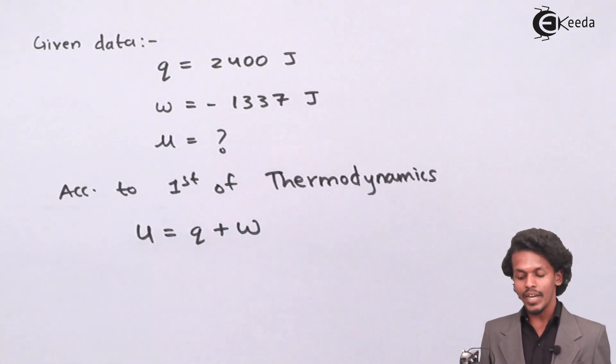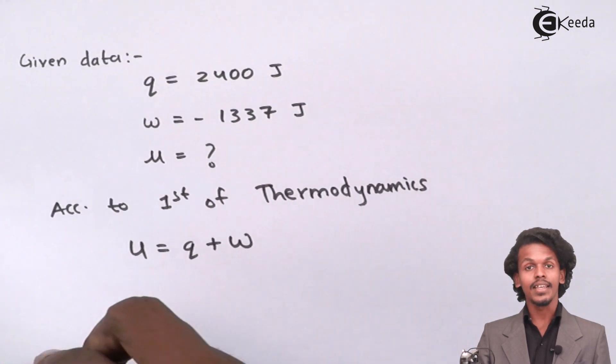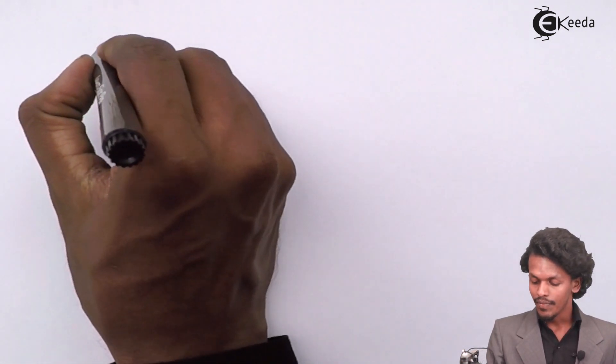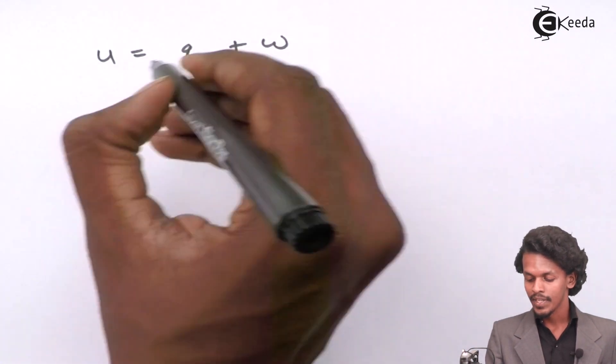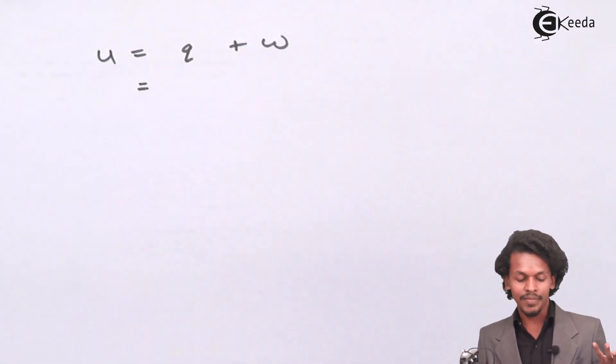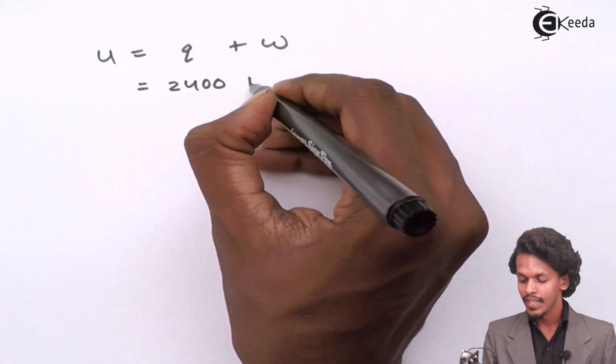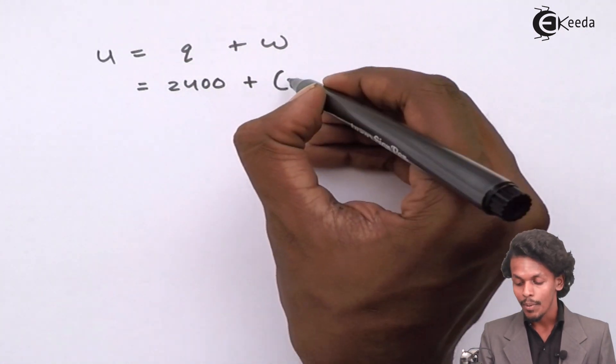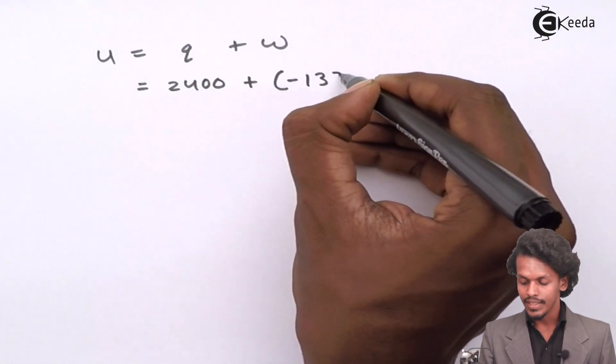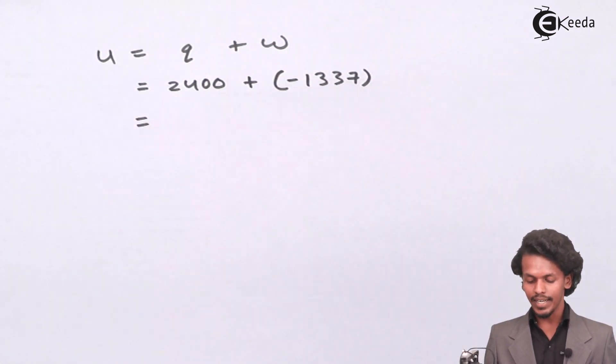Now we have to substitute the values and see what answer we get. U equals Q plus W. The heat provided to the system was 2400, and the work done by the system on the surroundings was minus 1337. Let us calculate the answer.